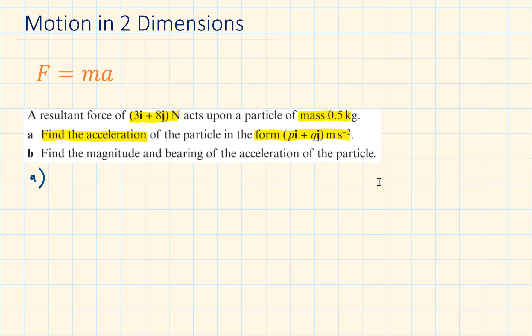We can start by writing out the formula F equals MA. Substituting the values of F and M, we will have 3i plus 8j equals 0.5 times A. Dividing both sides by 0.5 will give us the value of A.